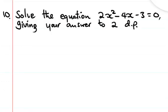Question number 10, November 2023 paper one. We need to solve the equation 2x squared minus 4x minus 3 is equal to zero. We should give the answer to two decimal places.